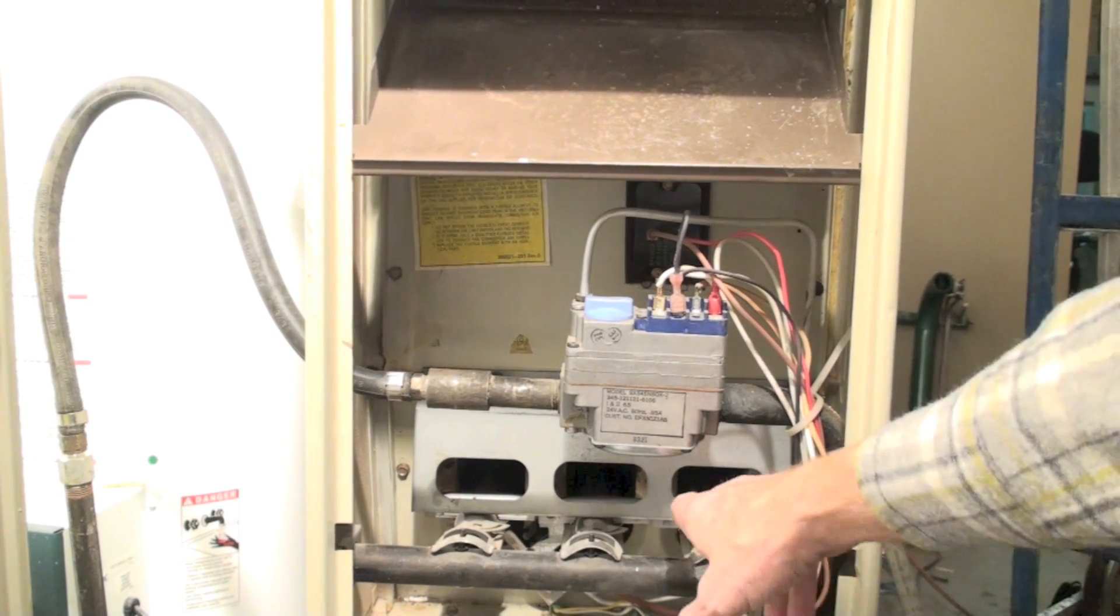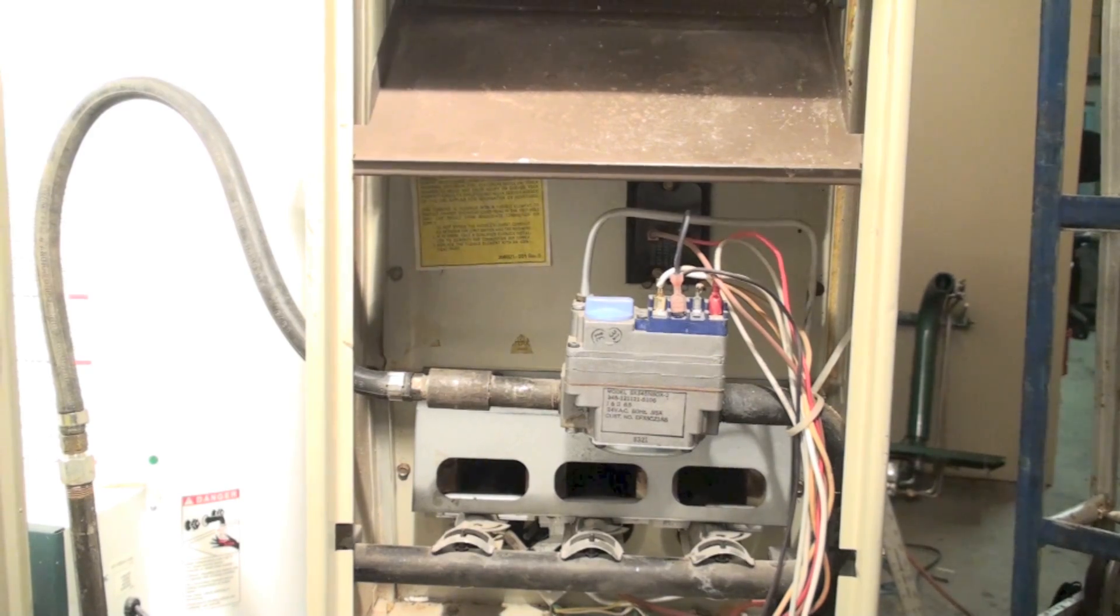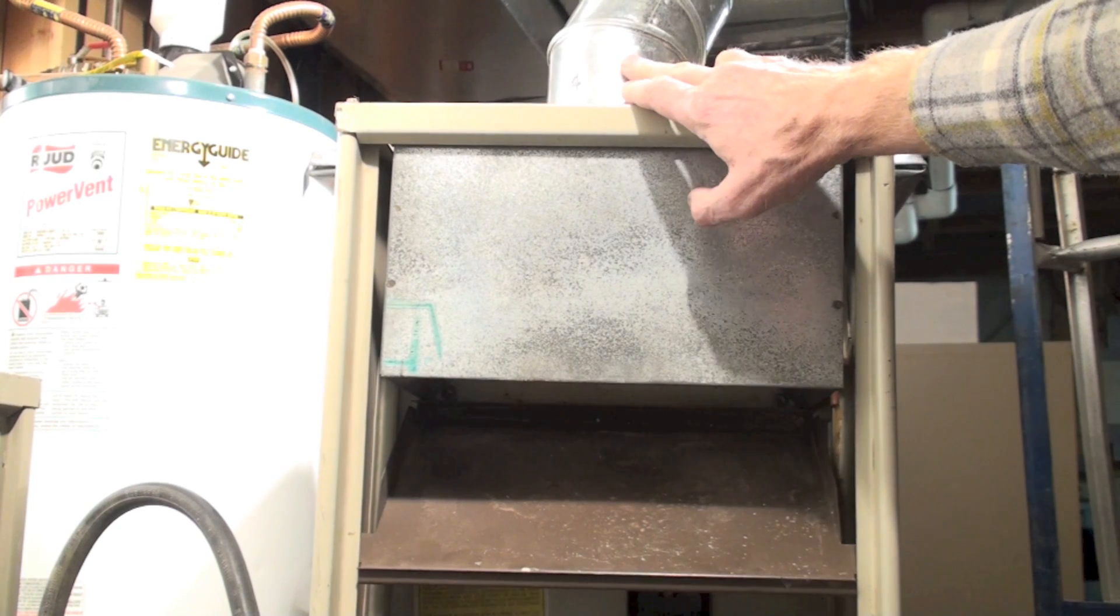In that if I put 100,000 BTUs into this furnace and it was up and running, just running what we call steady state, then 20% or 20,000 BTUs would be going out the vent here, and the other 80,000 would be available to warm the house.